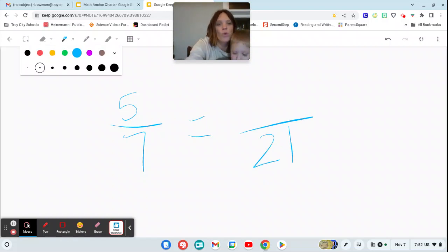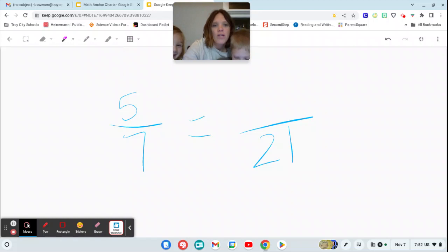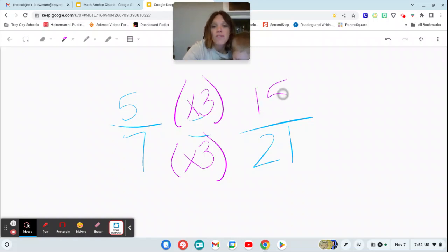I'm going to ask myself, okay, what rule applies here to my denominators 7 and 21? Well, if the rule here is 7 times 3 is 21, same rule has to apply to the numerator as well. So 5 times 3 is 15. These are equivalent fractions.